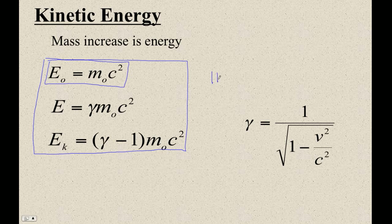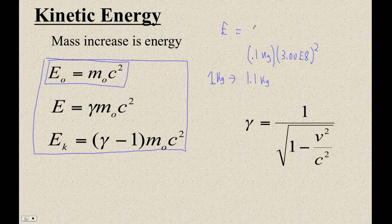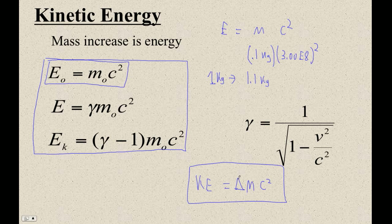Let's suppose you have a 1 kilogram mass. If you speed it up to about 0.42 the speed of light, it'll have a mass of 1.1 kilograms — it will have gained 0.1 kilogram. But where did that mass come from? The answer is the mass came from energy. So how much energy does it have? It's got 0.1 kilogram times the speed of light squared. I'm just using E equals mc squared. So really the formula I use is that the kinetic energy is the change in mass times c squared. That's the change in mass due to the dilation — due to the fact that it's speeding up — times c squared. That's your kinetic energy.